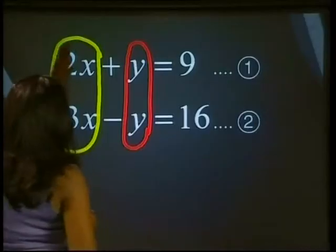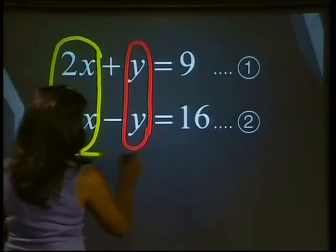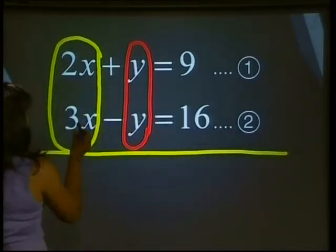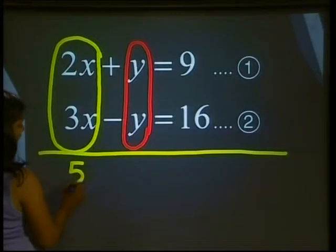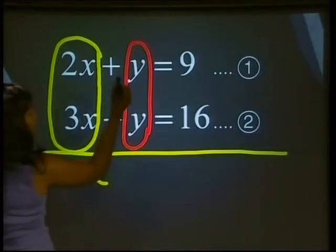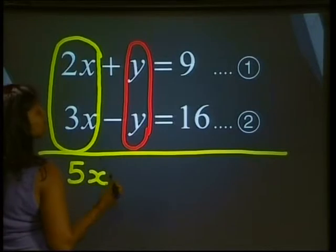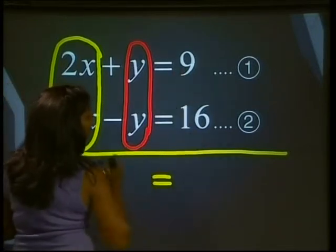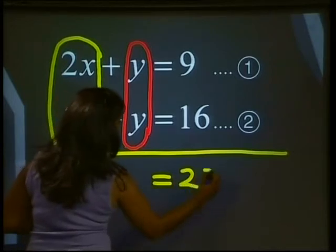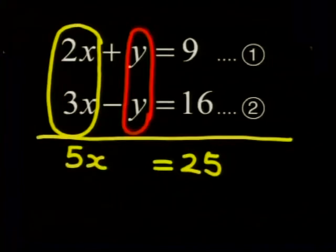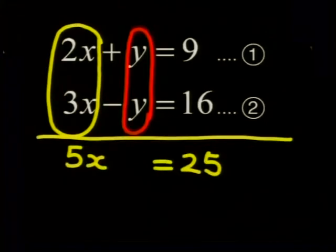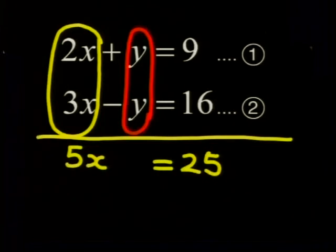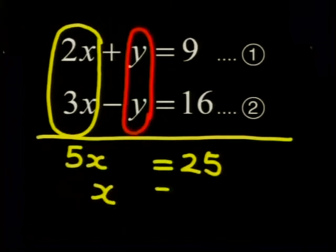If I add this column down this way, we'll just put a line across here. 2x plus 3x gives me 5x. Positive y plus negative y gives me 0. The right side is equal to 9 plus 16 gives me 25. We now have the equation 5x is equal to 25. We can solve for x. x is equal to 5.